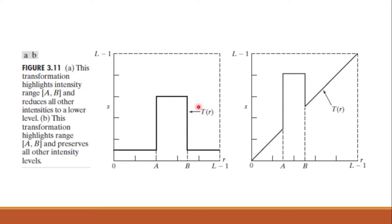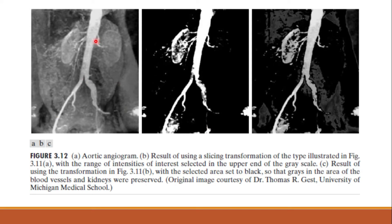This transformation function highlights only a specific range of values from a to b. So out of 255 gray level values, we may be highlighting only values between say 100 to 150, and all other values are kept near to 0 or equal to 0. In the second approach, the transformation highlights a specific range of intensities from a to b — say 100 to 150 gray levels — and preserves all other intensity levels unchanged.